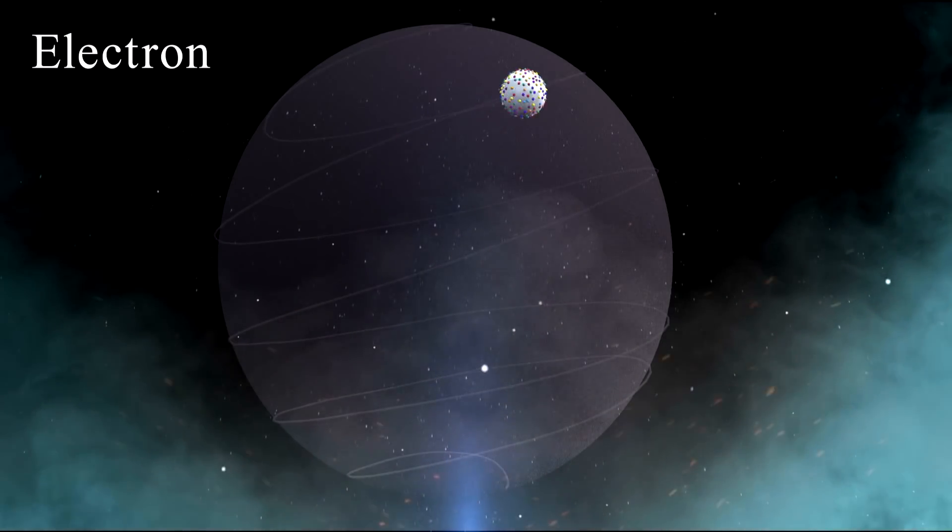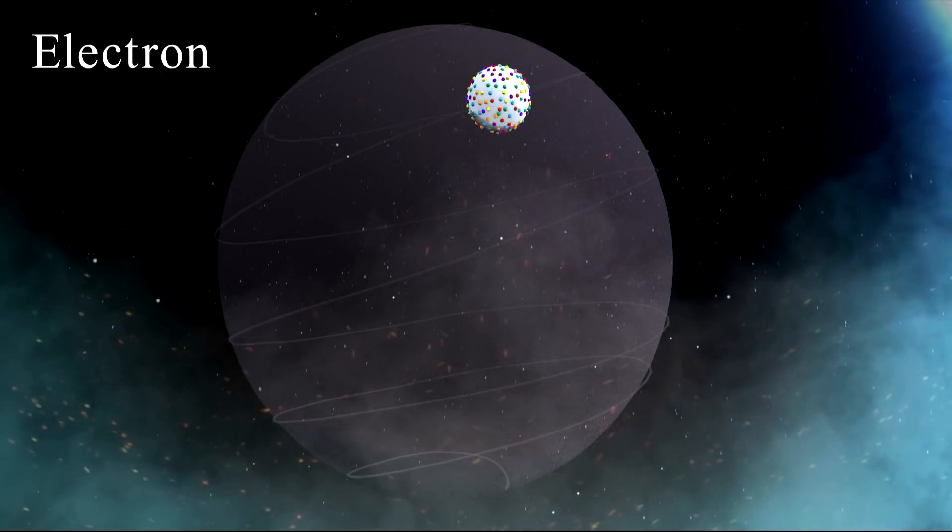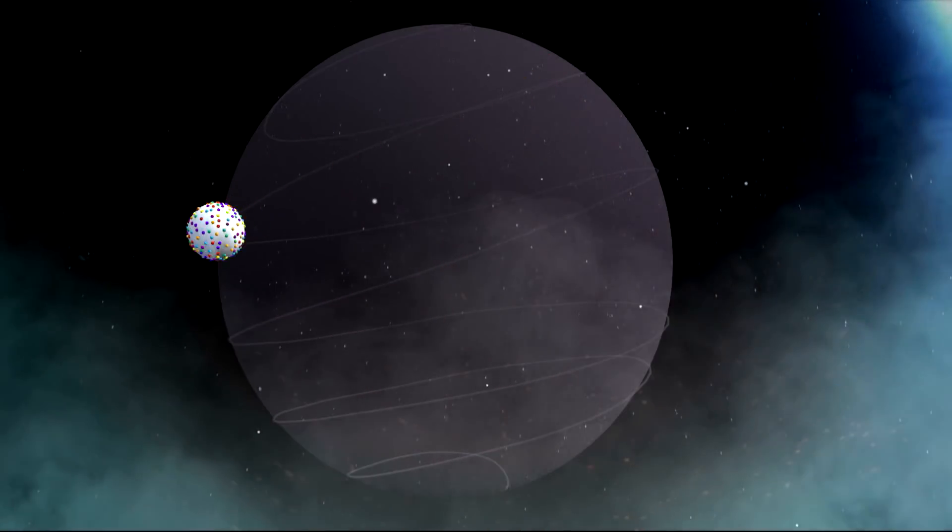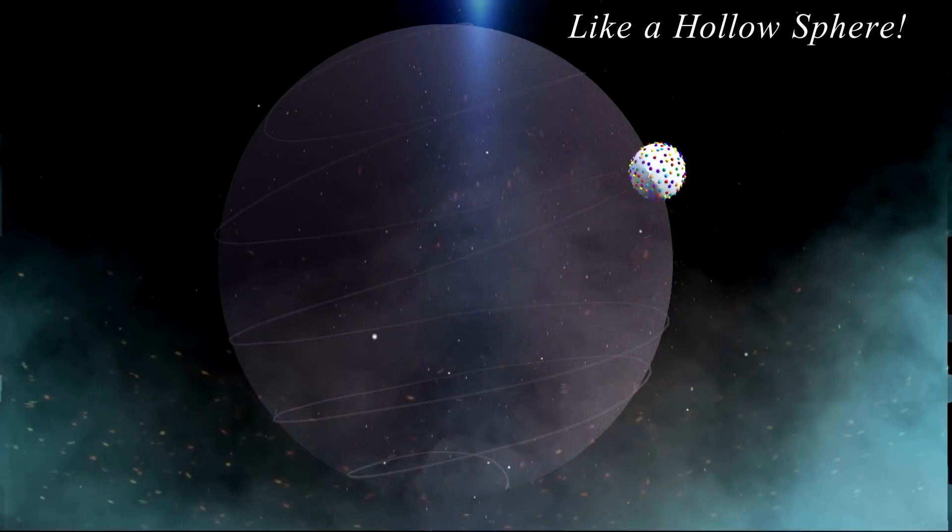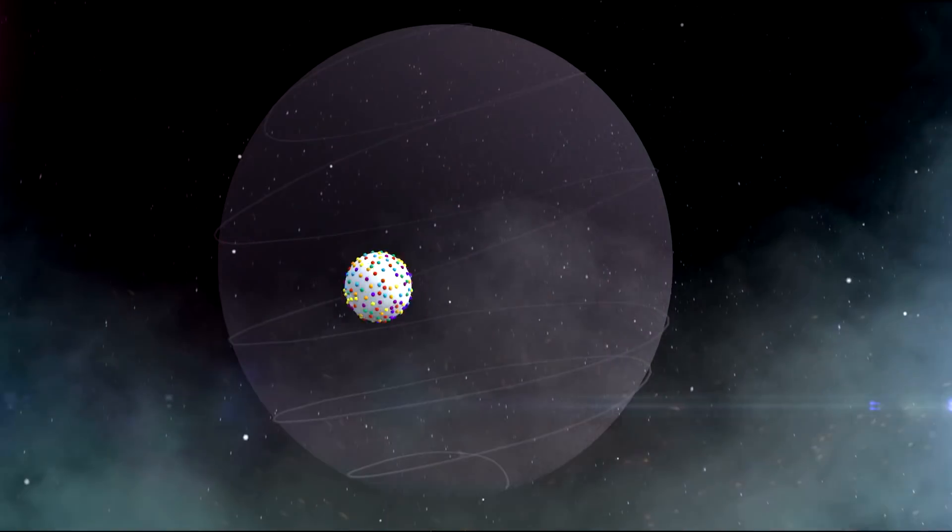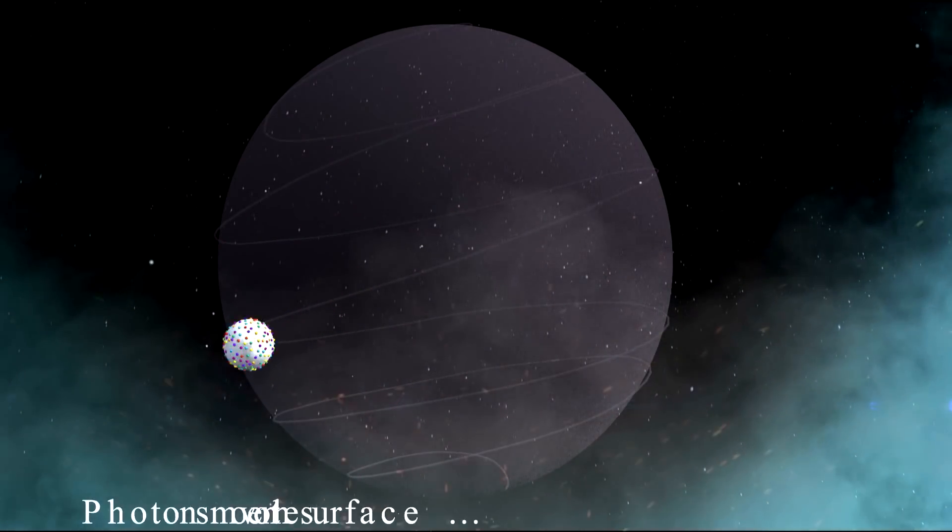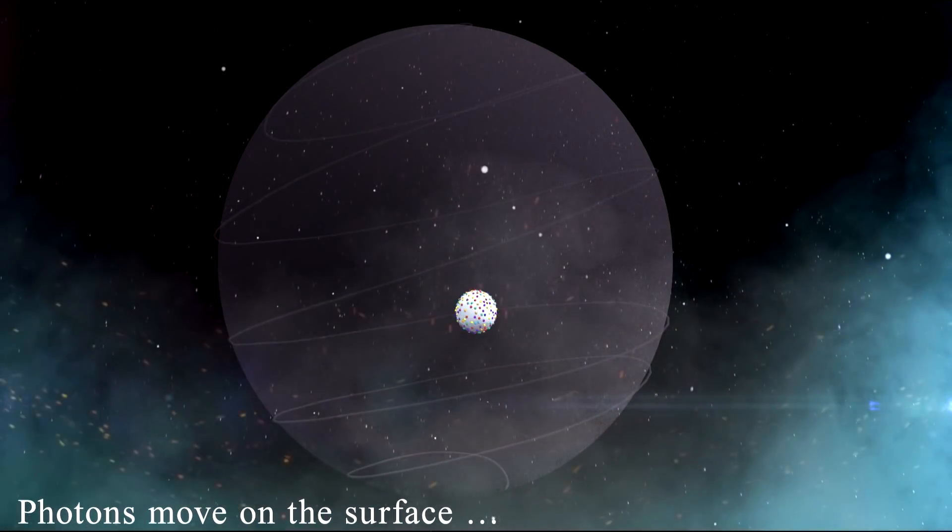This is an electron. We could imagine it as a hollow sphere. Photons move on the surface.